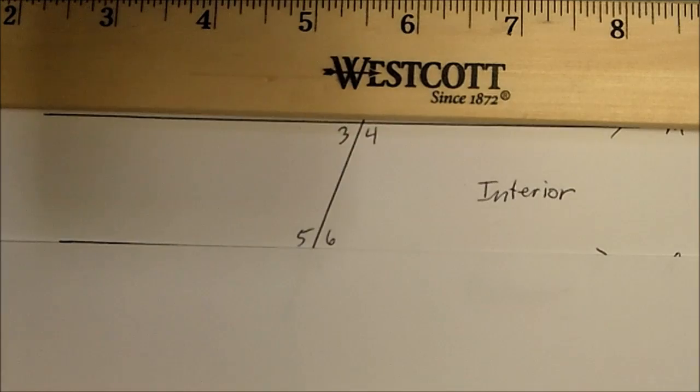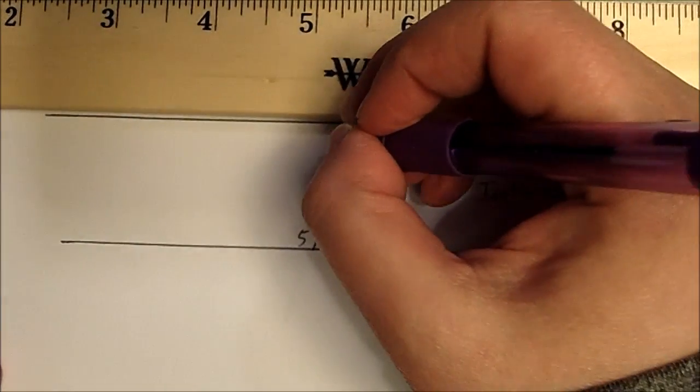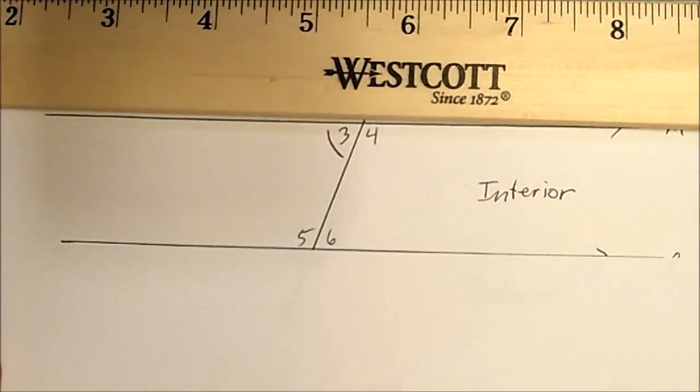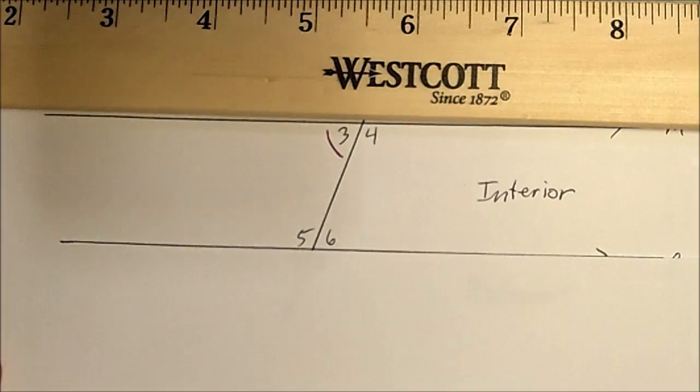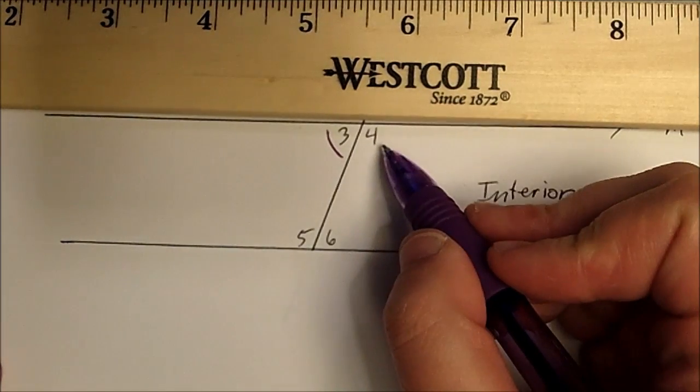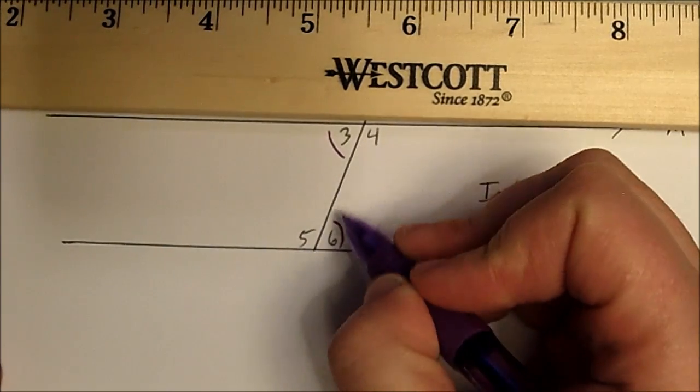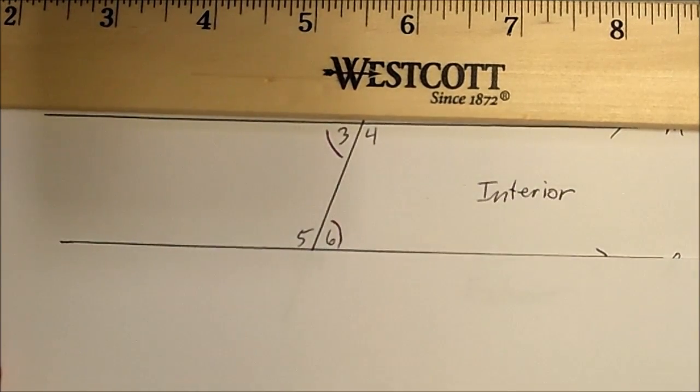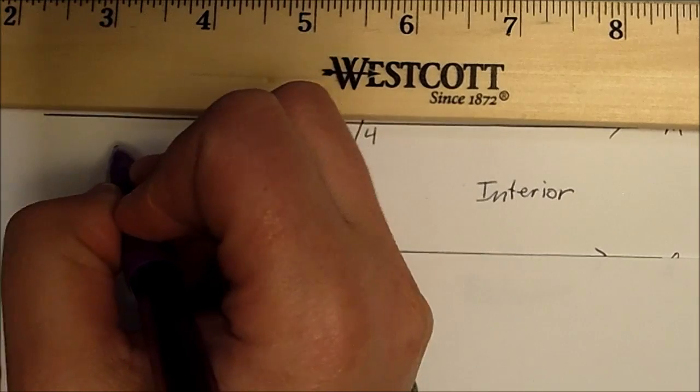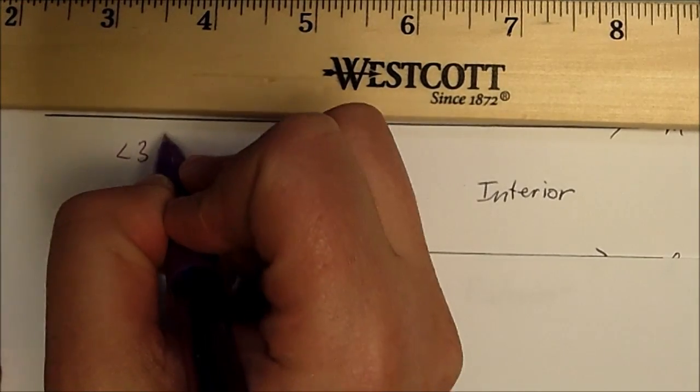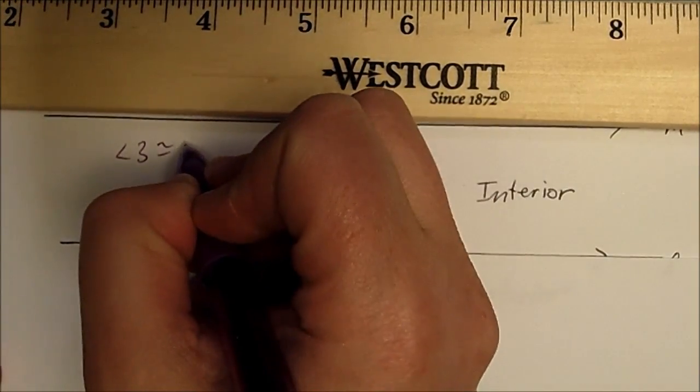Let's take a look at angle three. Looking at the alternate, we're not talking about angle four, we're talking about angle six. Three and six are alternate interior angles, so angle three is congruent to angle six.